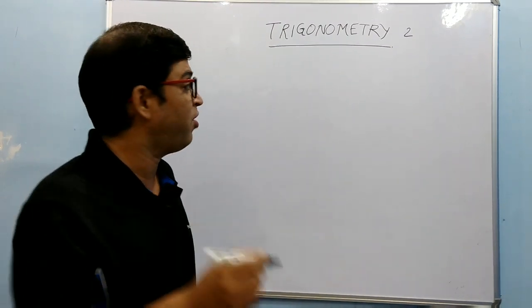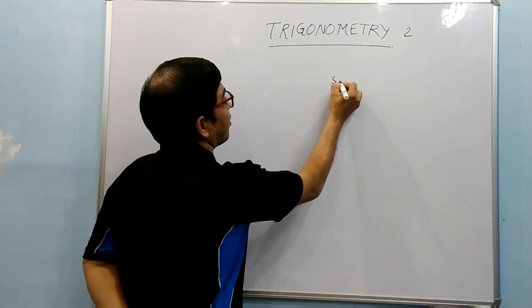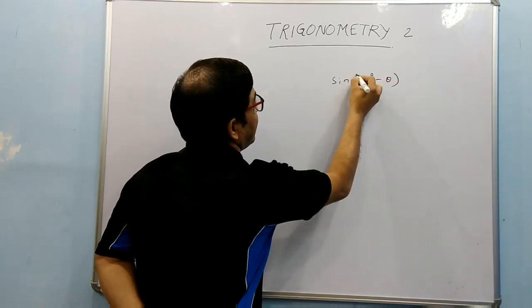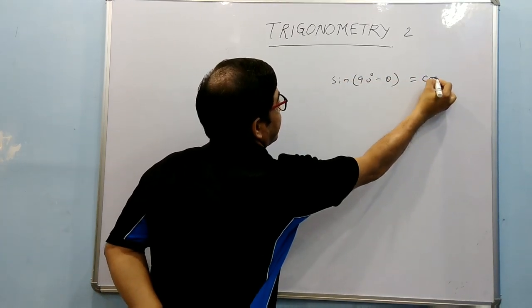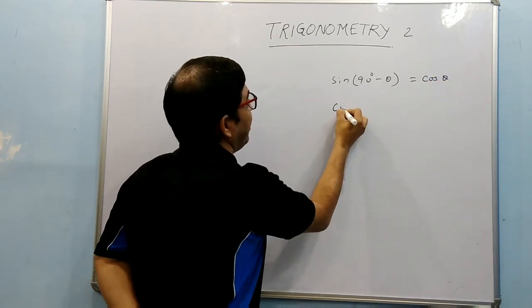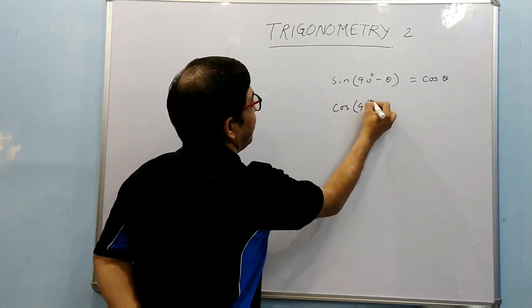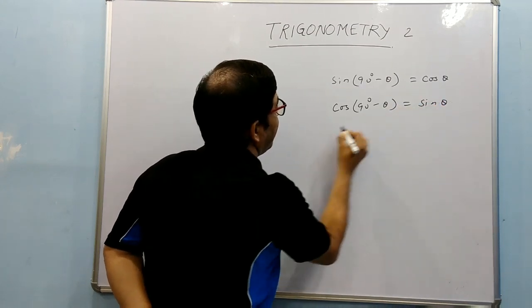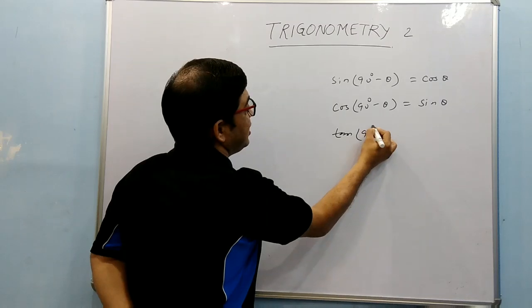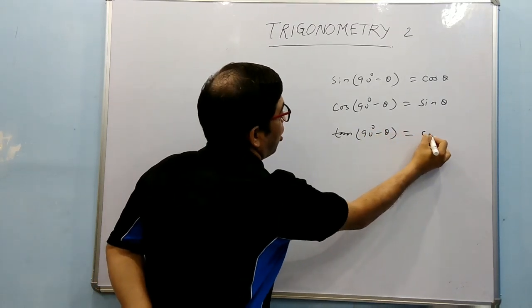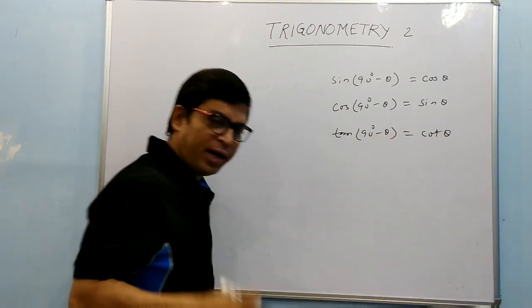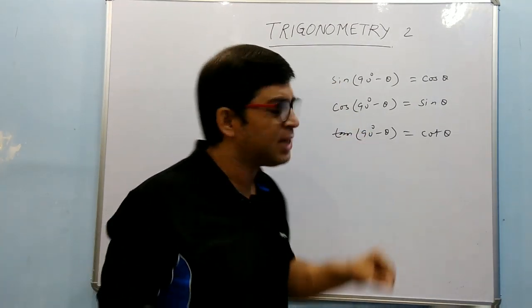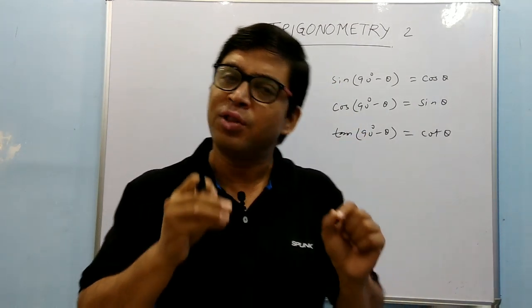Just for sake of revision, I am writing: sin(90° - θ) = cos θ. Same way, cos(90° - θ) = sin θ. tan(90° - θ) = cot θ, and cot(90° - θ) = tan θ. If you just remember sin and cos, your thing is done.